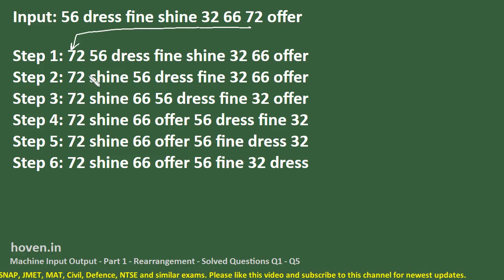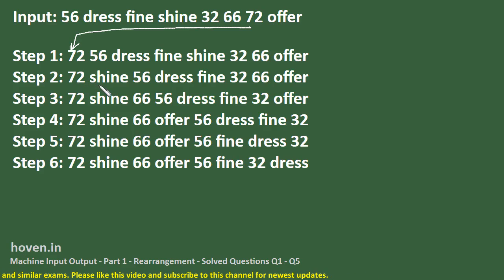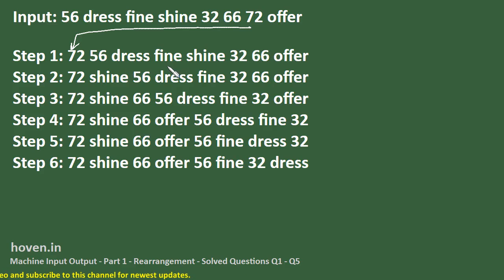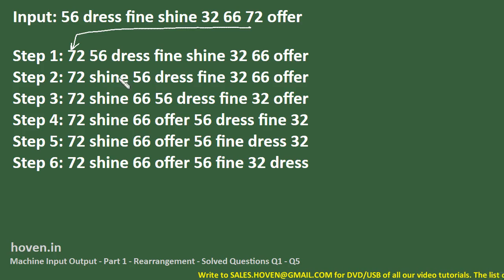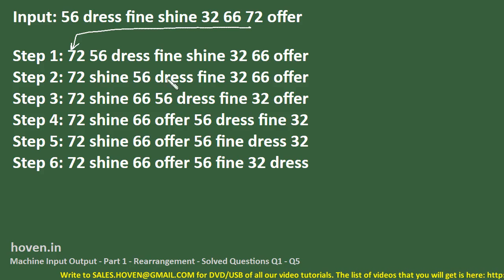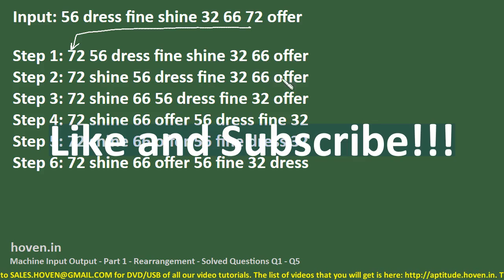So one conclusion is that in one step, the largest number moves to the leftmost side. What happens in the next step? We can see that just after 72, a word has appeared. This word — shine — is alphabetically the last among the words present. D comes first, then F, then O, then S. So shine appears next.